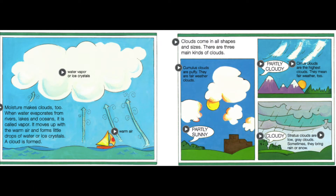Moisture makes clouds too. When water evaporates from rivers, lakes, and oceans, it is called vapor. It moves up with the warm air and forms little drops of water or ice crystals. A cloud is formed.